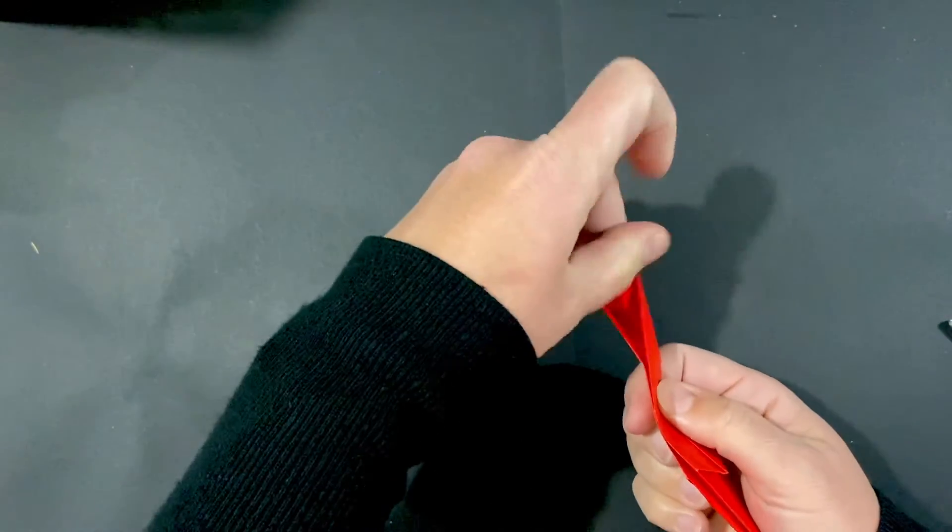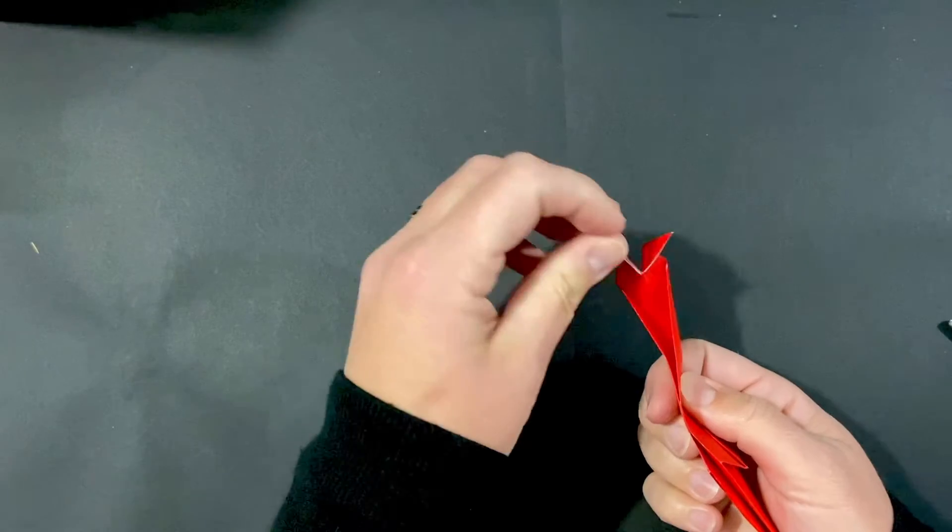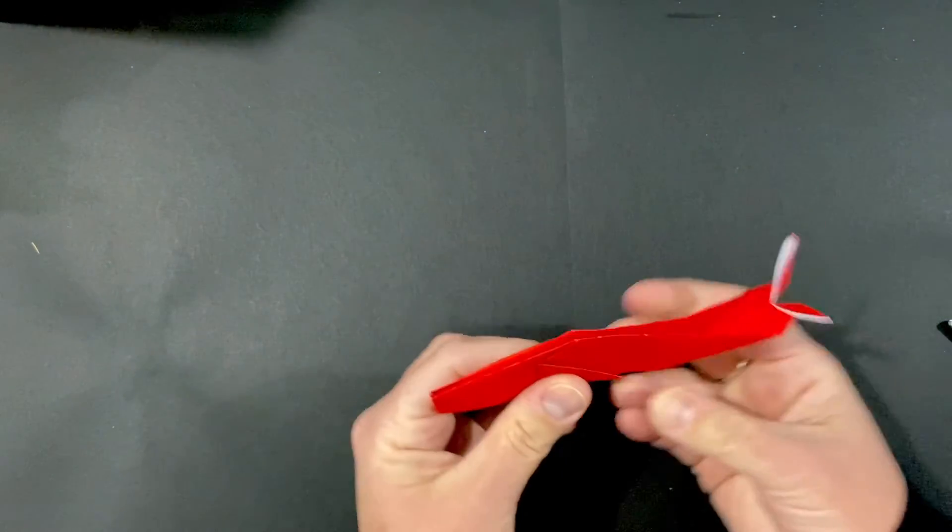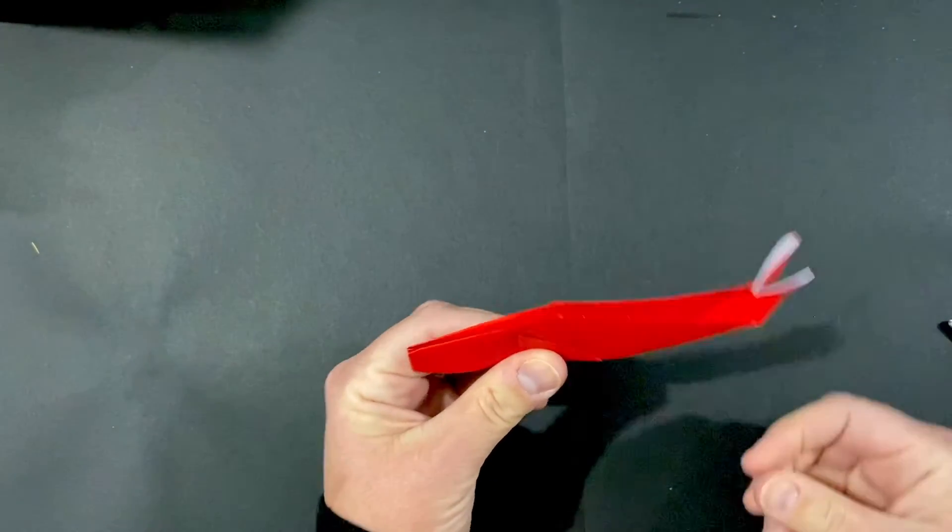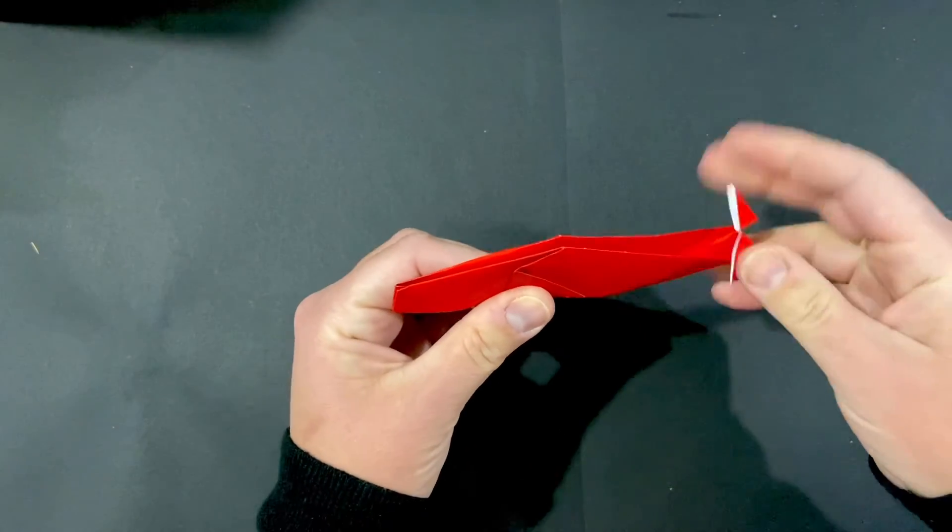On both sides, you might end up with a little extra and you can just peel that off. And now your whale has a nice little tail. Make sure that those get folded down.